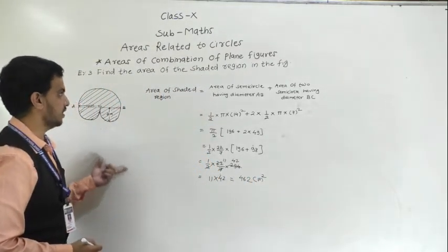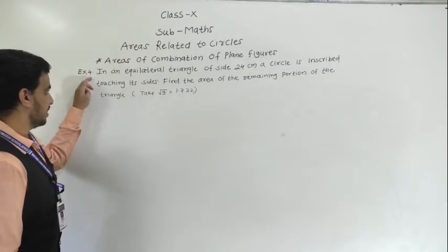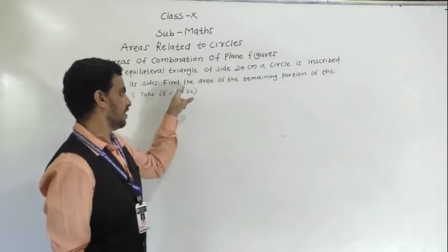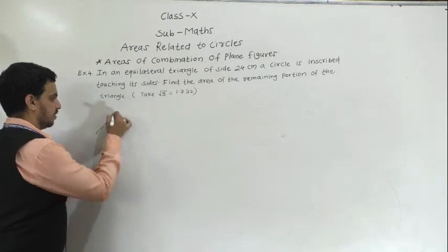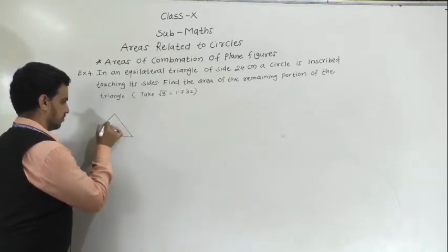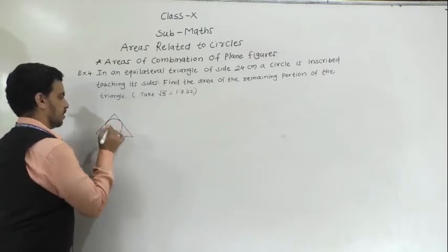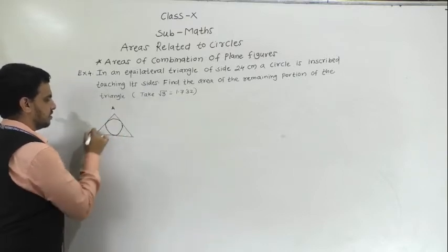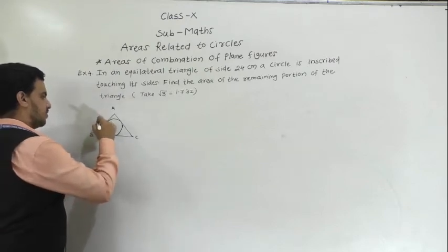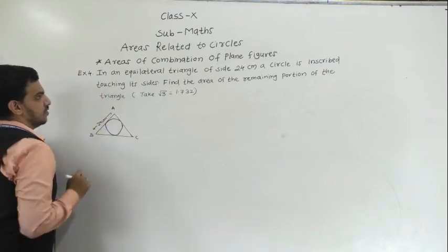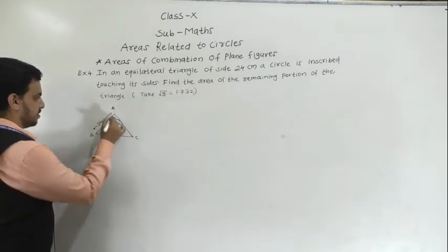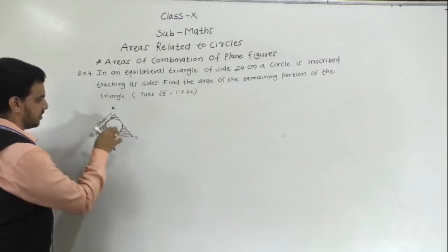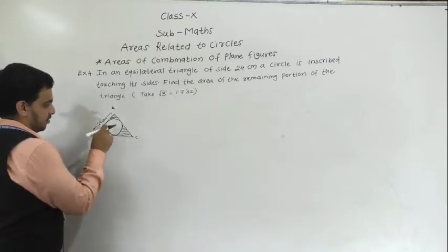The fourth example: an equilateral triangle of side 24 cm has a circle inscribed in it touching its sides. Find the area of the remaining portion of the triangle. The area of the remaining portion equals area of triangle minus area of circle. We first need to find the radius of the inscribed circle.